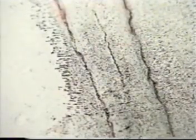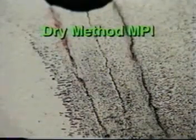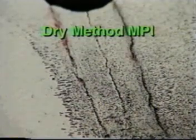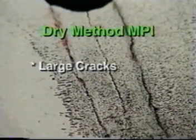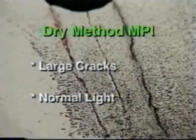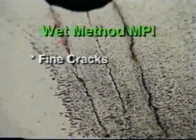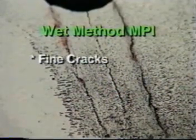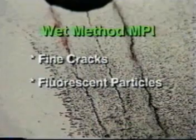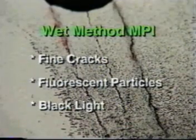When powder is applied, visible indications appear immediately because the magnetic particles are strongly attracted to any spot where a crack has created a leak in the magnetic field. The dry method magnetic particle inspection is fine for locating larger surface cracks in normal light. But if you need to find very fine surface flaws, you need the magnetic particle wet method using fluorescent particles in a black light.